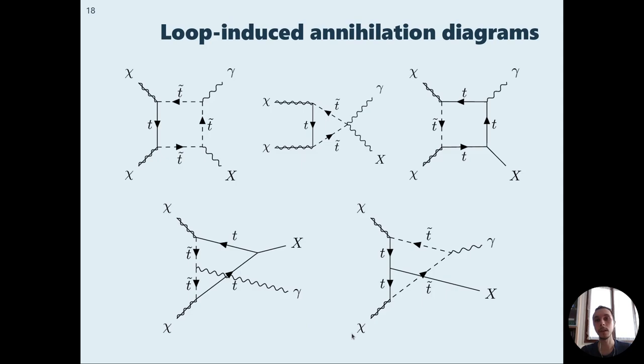These are the loop induced annihilation diagrams for this model. We have considered the three final states gamma gamma, gamma z and gamma Higgs. However, we have found out that the gamma Higgs final state is not relevant. The cross-section is lower with respect to gamma gamma and gamma z so it would not be shown in the results.